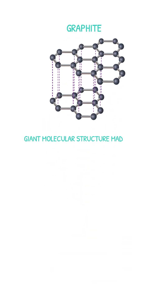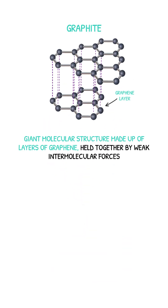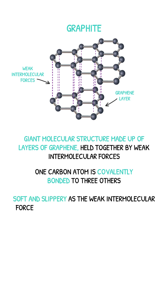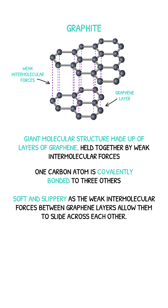Graphite is a giant molecular structure consisting of layers of graphene held together by weak intermolecular forces. Each carbon atom is covalently bonded to three others. The weak intermolecular forces between each graphene layer allow the layers to slide across each other, making graphite very soft.